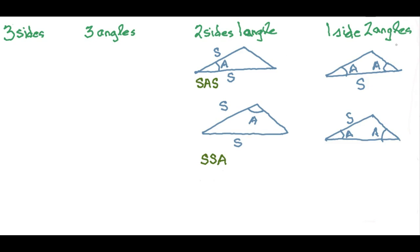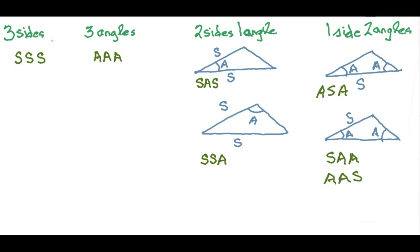In the case that we're given one side and two angles, either the side is between the two angles — we call that an angle-side-angle situation — or else it is not, in which case we call it a side-angle-angle or angle-angle-side situation. Using that same naming strategy, given three sides we call that side-side-side, and given three angles we call that angle-angle-angle.